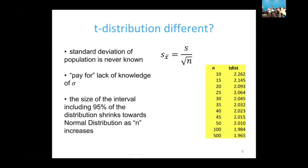Here's a profound statement: we never know sigma. You may say, well, if you're studying first years, there's a list somewhere. But when we're doing real research — whether in the lab or in the field — we never know the whole population. We're always doing a sample.